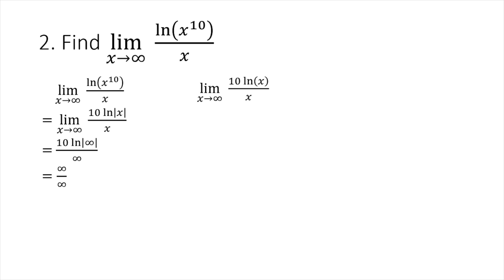According to L'Hôpital's Rule, we differentiate the numerator and denominator separately. The derivative of 10 ln x with respect to x is 10 times 1 over x, and the derivative of x with respect to x is 1. So we have the limit of (10/x) divided by 1 as x approaches infinity. As x approaches infinity, 1 over x approaches 0, so we get 10 times 0 divided by 1, which equals 0. This is our final answer.